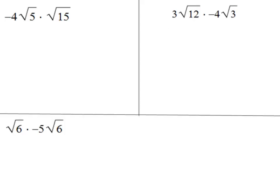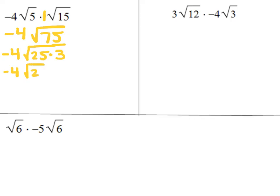Pause the video and try the first one on the top left on your own. If I multiply this radical, there's really a 1 in front of that square root of 15. So I can multiply negative 4 times 1, which gives me negative 4, and 15 times 5 to give me the square root of 75. To simplify, the largest perfect square that divides into 75 is 25. So it's negative 4 square root of 25 times 3. Split up the radical to get negative 4 times square root of 25 times square root of 3. The square root of 25 is 5, so negative 4 times 5 gives negative 20 square root of 3.